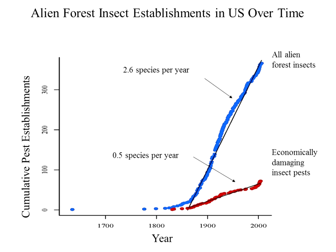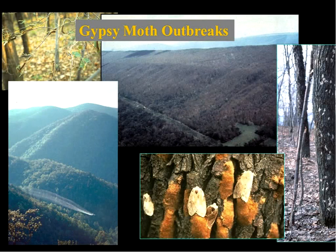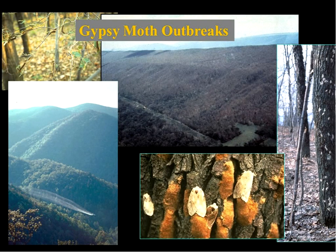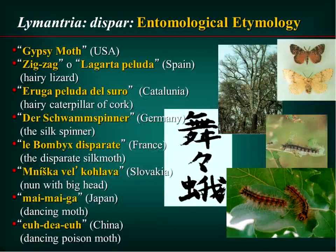Gypsy moth is certainly one of the first — we think it originally came in around the 1860s, and that's when we started accumulating species in North America. There are probably over 400 non-native insects in North America, but gypsy moth is one of the handful that cause problems, because it exhibits these rather spectacular outbreaks.